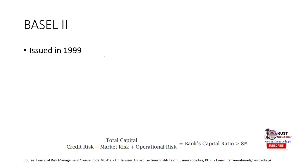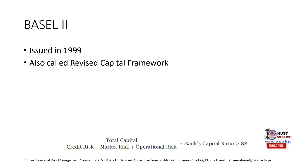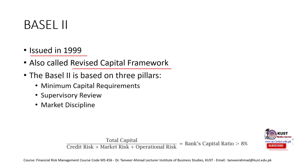Basel II was issued in 1999 and is also called a revised capital framework. There are three pillars of Basel II. The first one is the minimum capital requirement. This is similar to the requirement given in Basel I, where there was a requirement of eight percent minimum capital adequacy ratio — that a bank should maintain at least eight percent of risk weighted assets as its capital, with a discussion on what portion of that capital should be tier one and tier two.